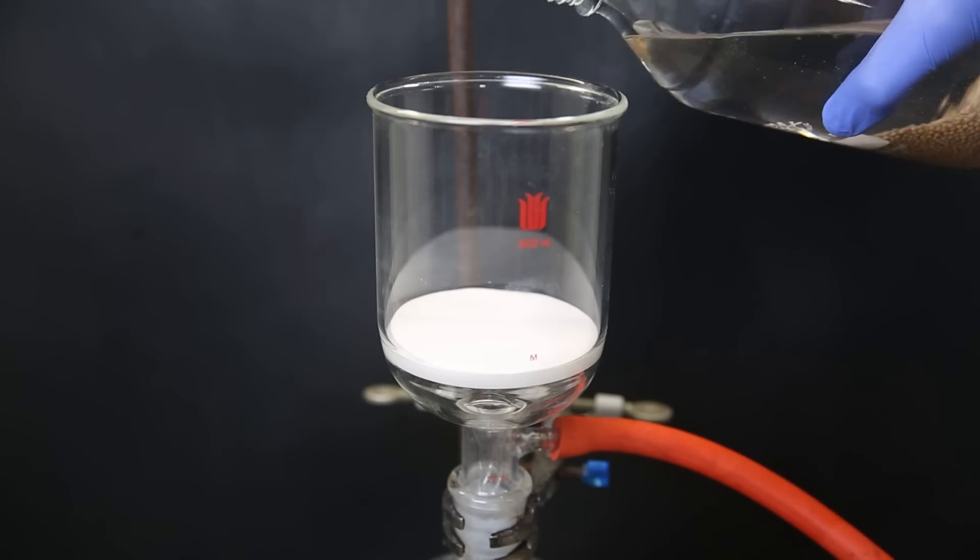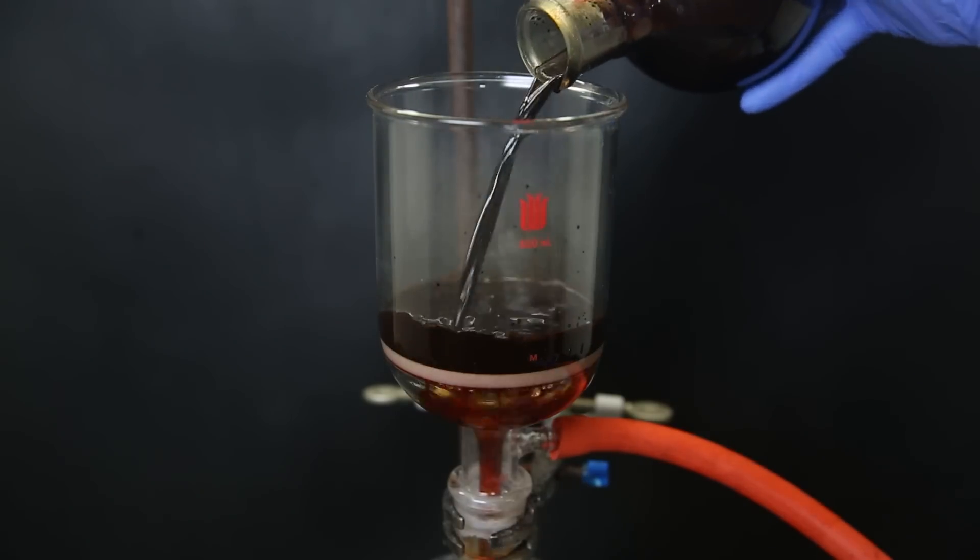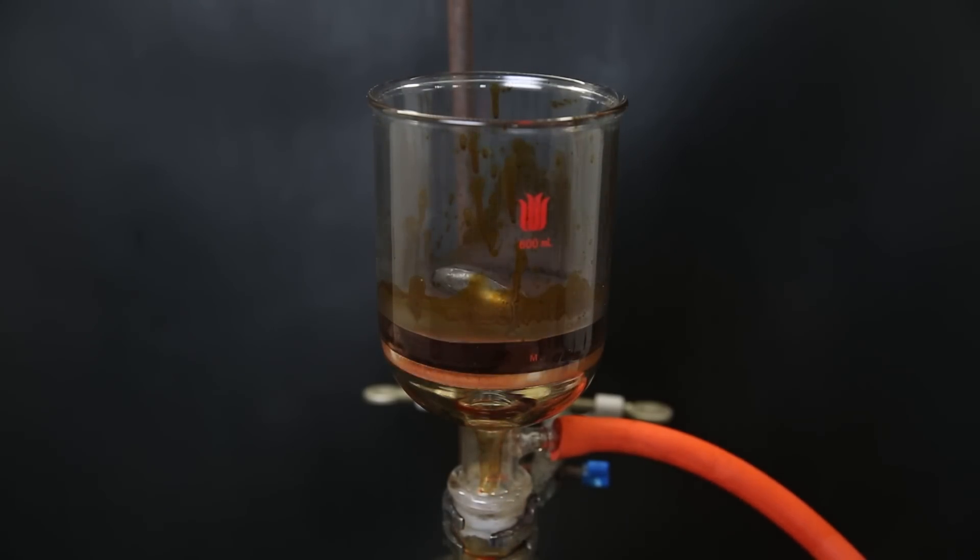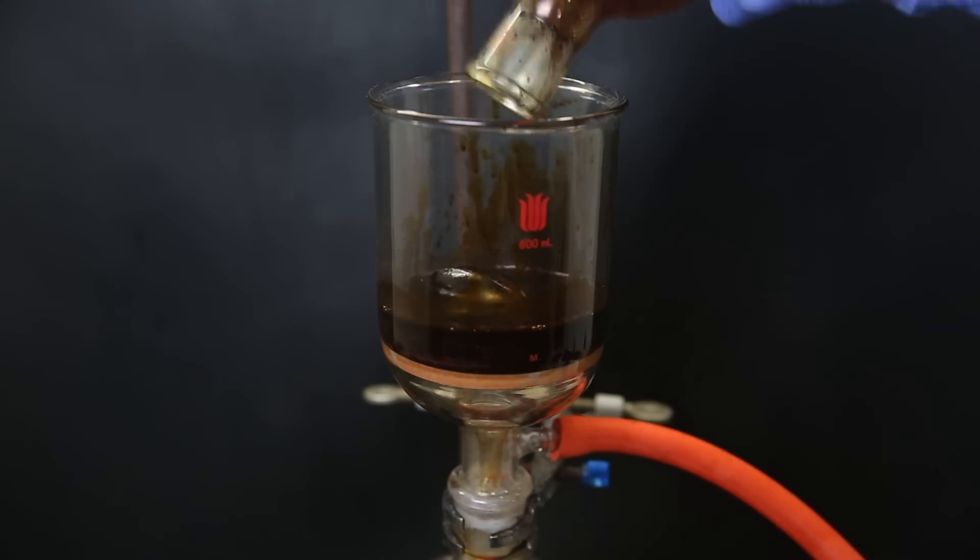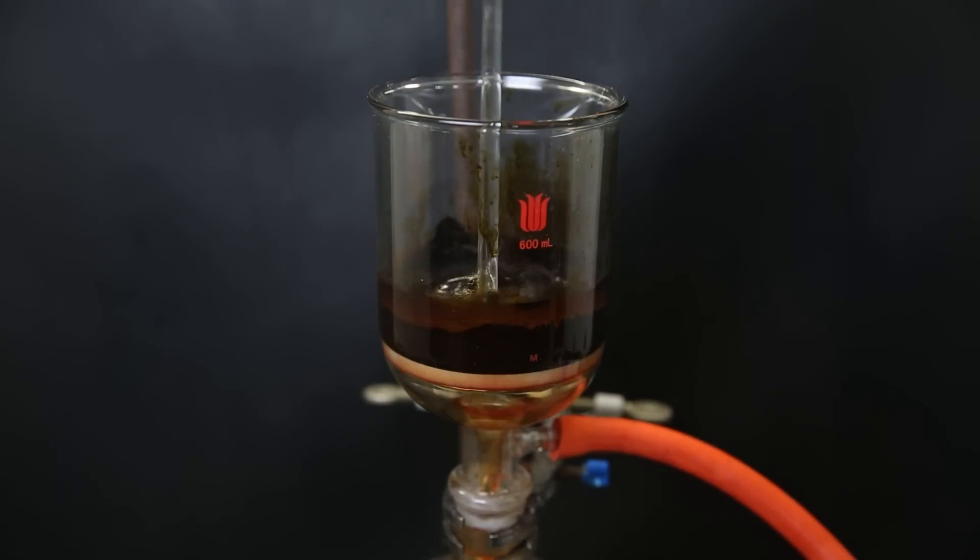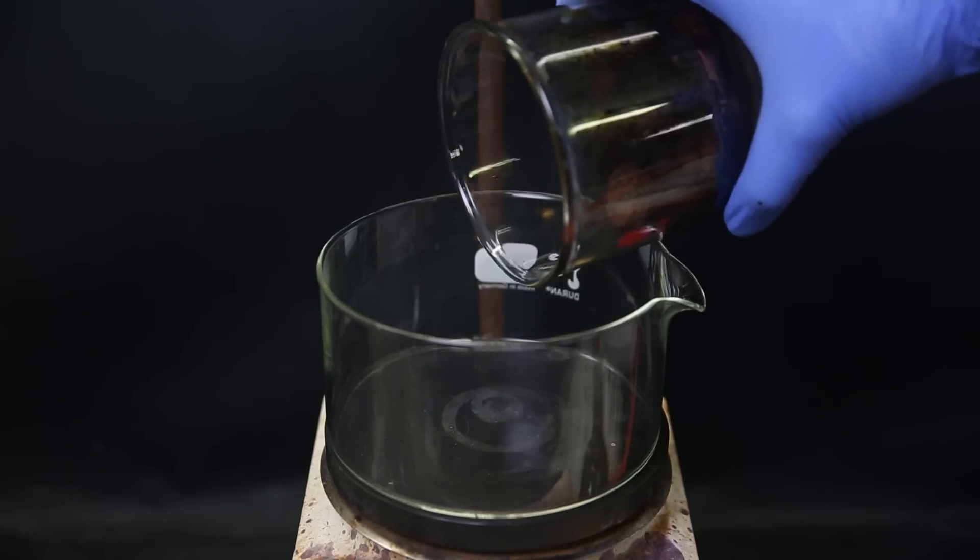So I set up a glass frit with a filter paper and wet it with some carbon tet. I then filter the whole reaction mixture through, and we can see it is still letting off some fumes. I wash out the flask with more carbon tetrachloride, and also wash the residue with more carbon tet. I stir it around and let it dry on the filter for a second, and then move it all to a crystallizing dish.